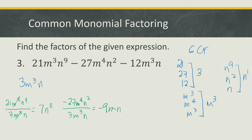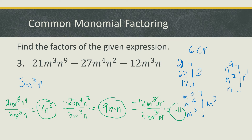For the third term, negative 12m cubed n divided by 3m cubed n: negative 12 divided by 3 is negative 4, m cubed cancels, and n cancels. So the last term is negative 4. The three terms of the second factor are 7n to the 8th minus 9mn minus 4. These are now our factors.